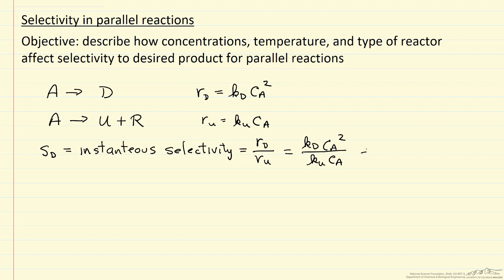This simplifies as the ratio of these rate constants and the concentration of A. So if we want to maximize this instantaneous selectivity,